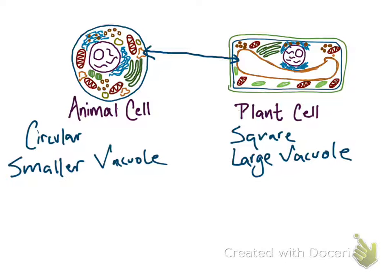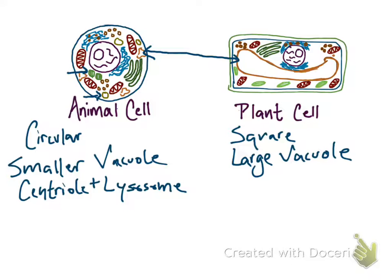Another difference is that animal cells have some organelles that are just unique to the animal cell, and there are two of these: the lysosome and the centriole. These two organelles are not necessary to the plant cell, and therefore the plant cell does not have these organelles.